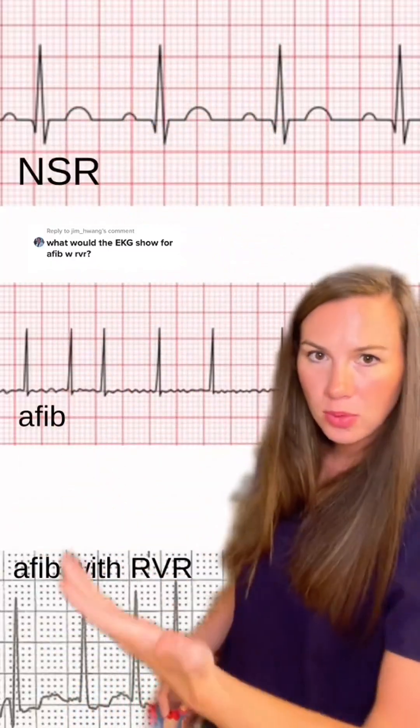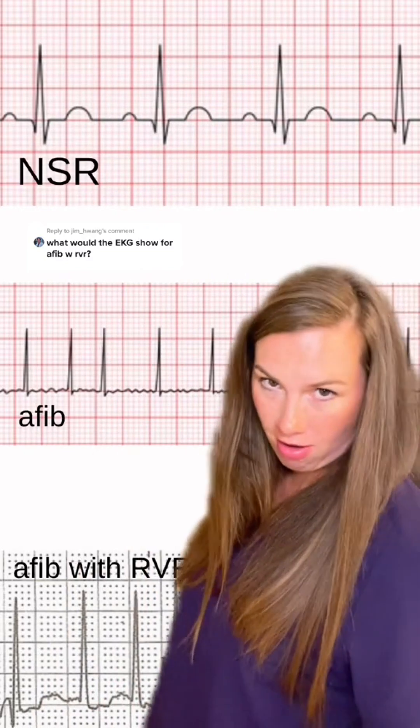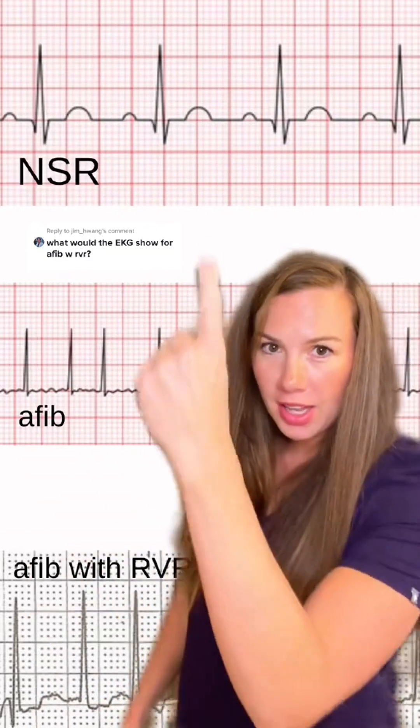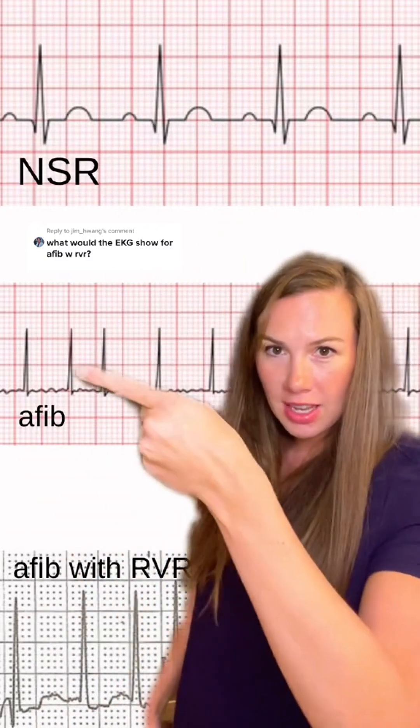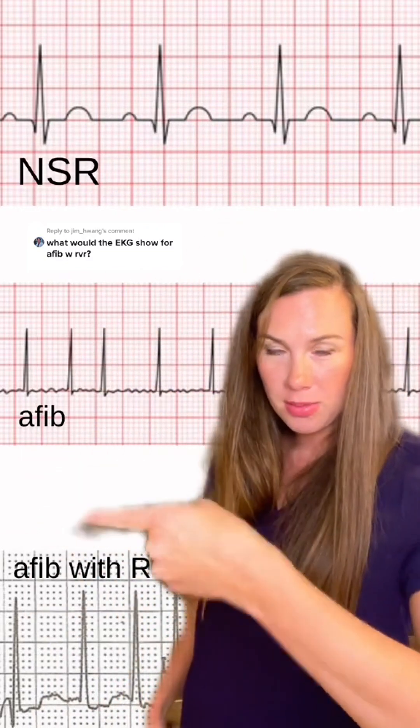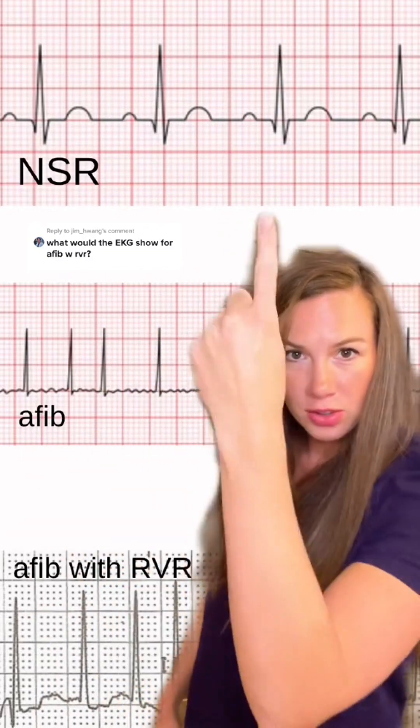Let's show what AFib with RVR looks like on an EKG and compare it to normal sinus rhythm. Here are some rhythms: we've got normal sinus, AFib, and AFib with RVR.